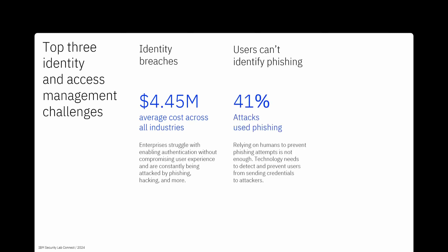Users can't always identify phishing — users do receive many emails and click on unwanted links, which causes data breaches. Almost 41% of attacks leverage phishing techniques targeting employees and their company's customers. Just relying on human vigilance to prevent phishing attempts isn't enough today. Technology needs to play a critical role in detecting and preventing users from unknowingly sharing their credentials with attackers, and an effective IAM solution can incorporate advanced phishing detection and prevention mechanisms.